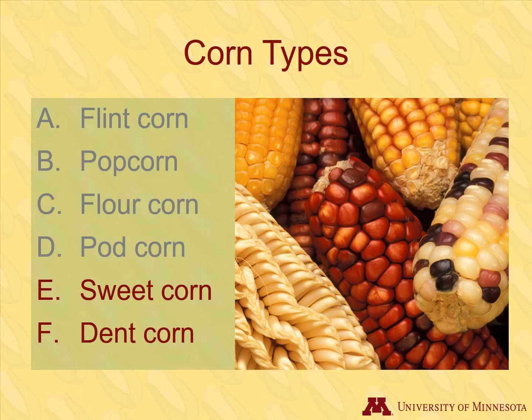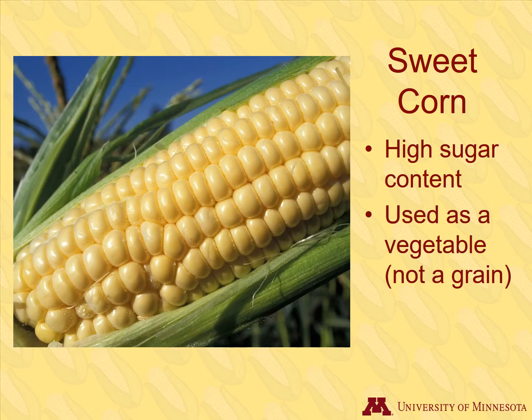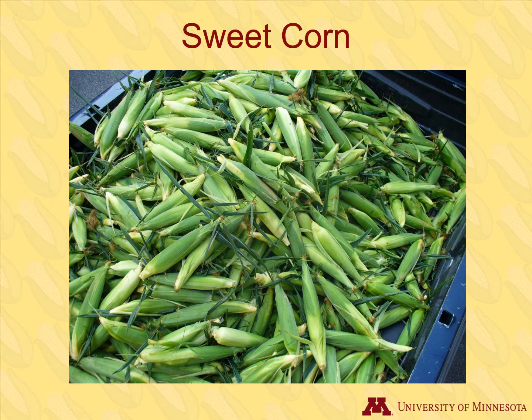Many people feel that sweet corn, or corn on the cob, is one of their favorite things about summer. Sweet corn is different than other corn types because it has a higher sugar content. Also, sweet corn is used as a vegetable, not as a grain like the other corn types. Fresh sweet corn is a treat most Americans are familiar with and its popularity is increasing in the rest of the world. Another difference between sweet corn and other corn is the way it's harvested. Sweet corn is harvested while it's immature, and the whole ear is harvested, while grain corn is combined so that kernels are off of the cob.